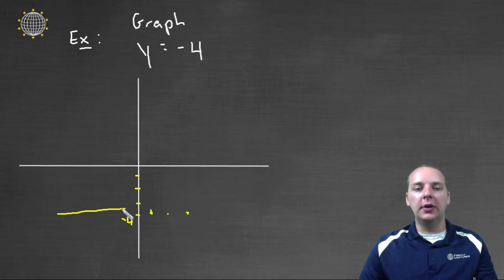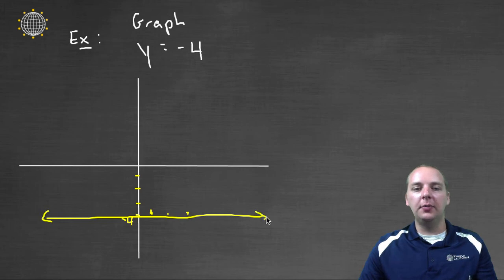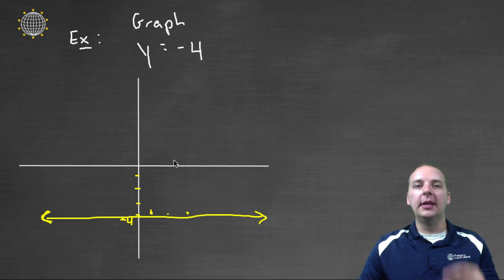So this is going to create a horizontal line, if I can draw a horizontal line, it's not the straightest line ever, but yeah, a horizontal line at y equals negative four. So anyways, that's how we graph horizontal and vertical lines.